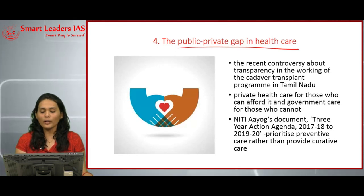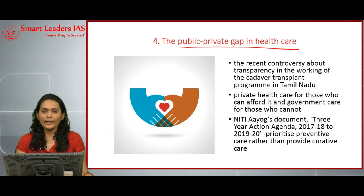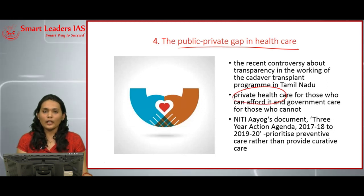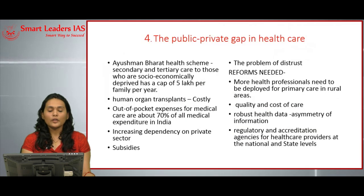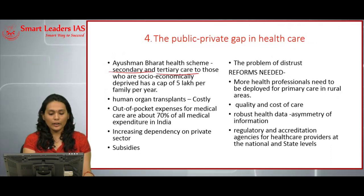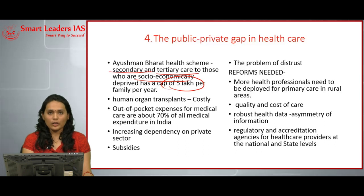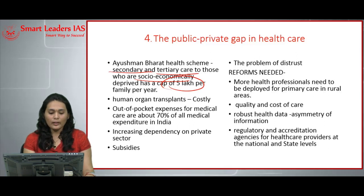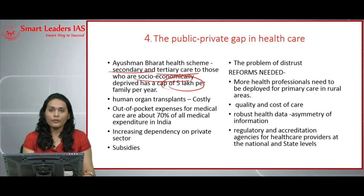The next article deals with the public-private gap in Indian healthcare. A recent controversy broke out regarding lack of transparency in the functioning of the transplant program in Tamil Nadu, highlighting the increasing cost of healthcare, especially in the private sector. The three-year action agenda of Niti Aayog emphasizes prioritizing preventive healthcare rather than curative healthcare. The new Ayushman Bharat scheme, initiated by the central government, gives secondary and tertiary healthcare to socially and economically deprived people up to a cap of five lakh rupees per annum. However, surgeries involving human transplantation are expensive and go beyond this five lakh per family cover. The increasing dependency on the private sector by the government is also a problem.